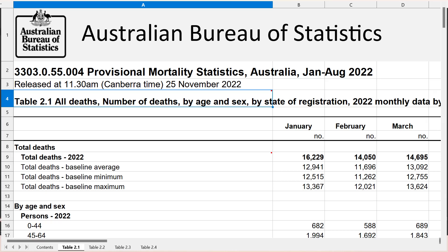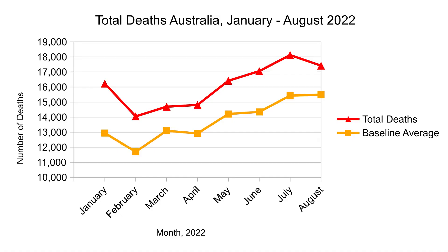I'll be graphing a lot of this to make it easier to comprehend. Here's a graph showing the total deaths for 2022 so far, shown in red. The orange line represents the baseline average, which is the average number of deaths between 2017 and 2021, excluding 2020.